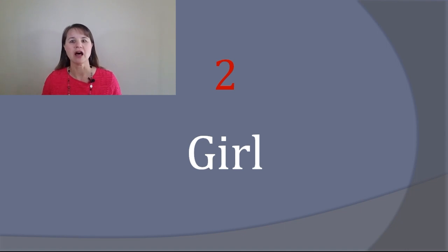What gives people a lot of problem here is the combination of the ER followed by the L. Note that L is also a syllabic L, meaning that it forms a syllable by itself, so this word will sound like two syllables. Girl.